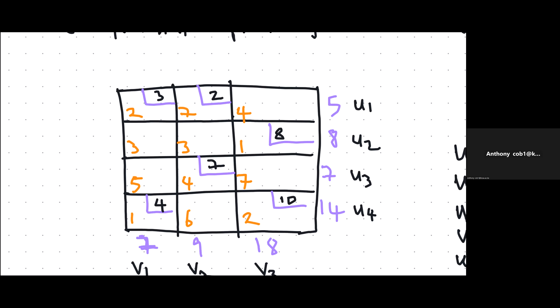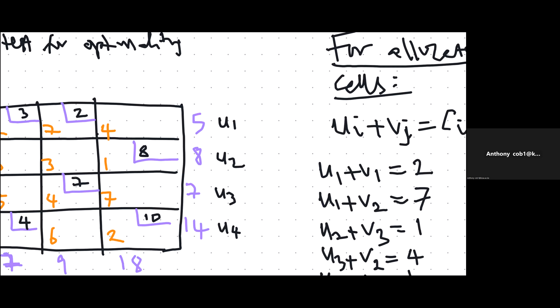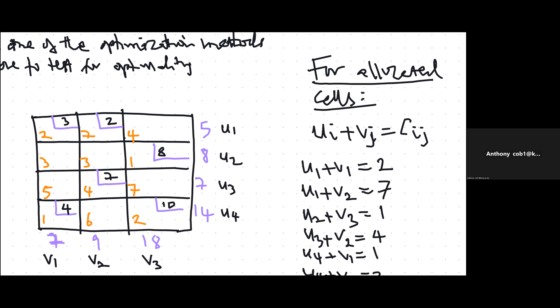For those two types of cells we do two things. For the allocated cells, we find the value of Ui plus Vj corresponding to that cell. So Ui plus Vj should equal Cij, where Cij is the cost of that particular allocated cell. For example, cell (1,1) is from row 1 to column 1, so C11 equals 2. C12 is 7, C13, C21, C22, and so on.